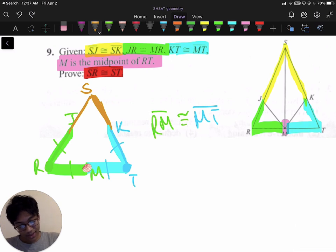and we know that JS is congruent to SK, we know that these two sides, these two sides over here, are congruent. We can use that fact to our advantage. Here's how. You know that RJ is congruent to KT, right?